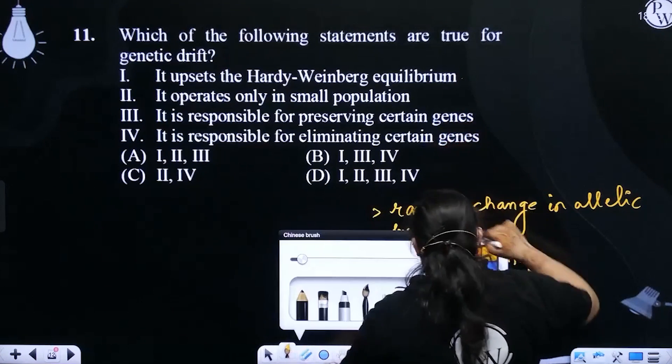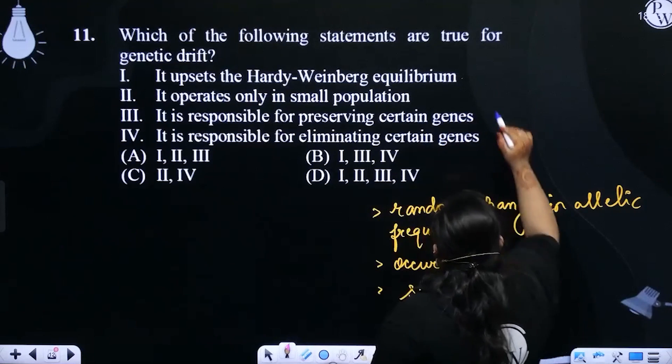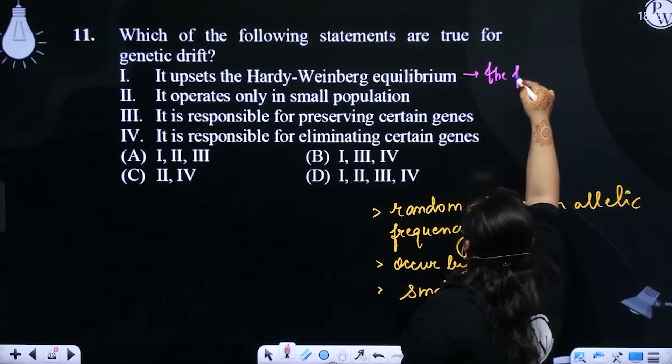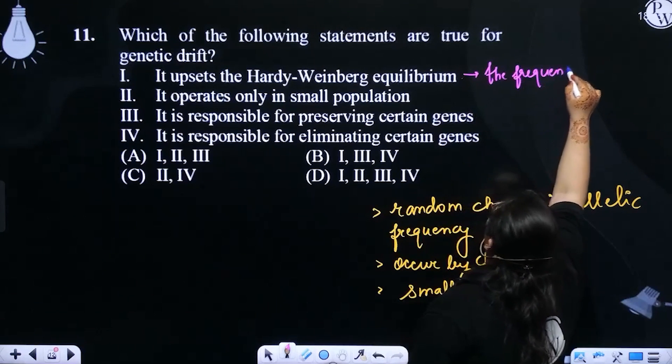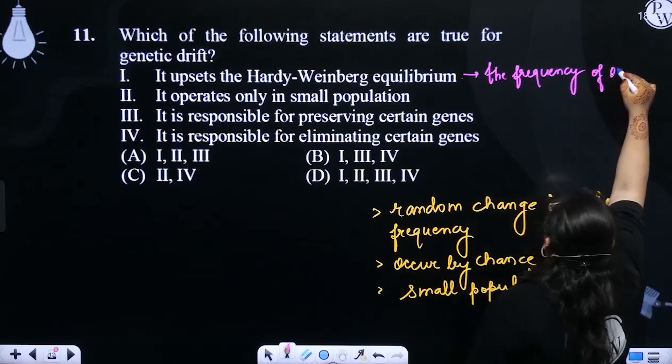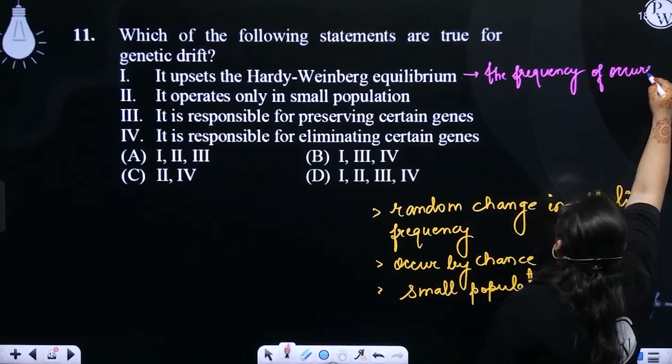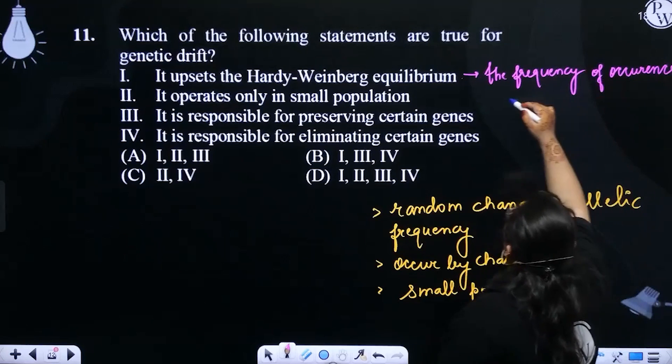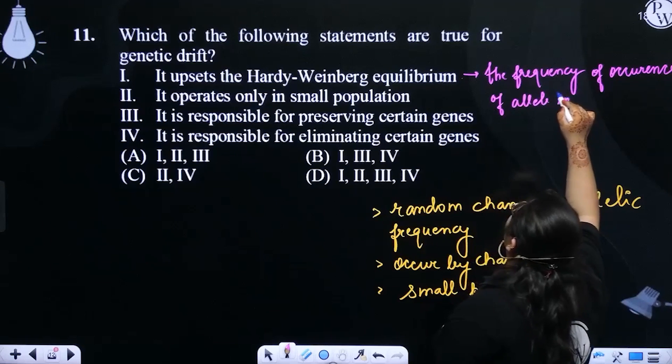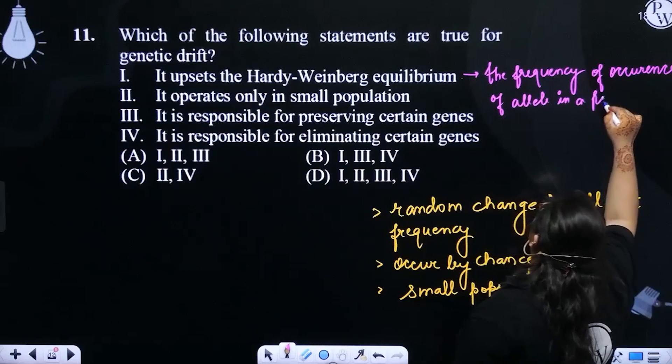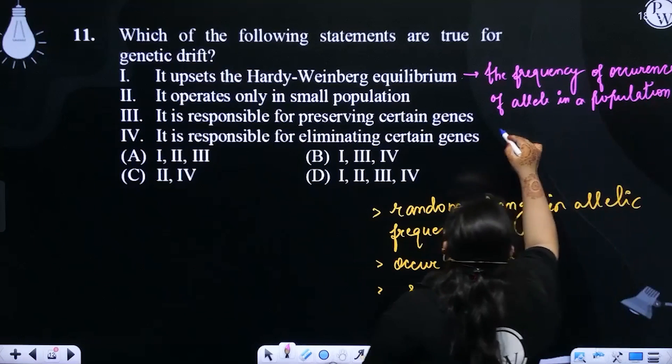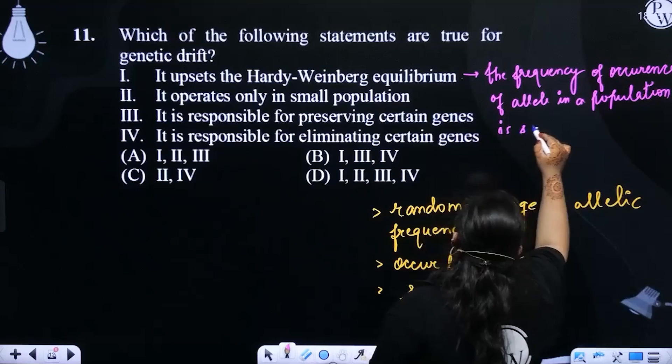So what is Hardy-Weinberg Equilibrium? The frequency of occurrence of alleles in a population is same through generations.